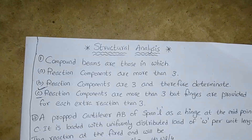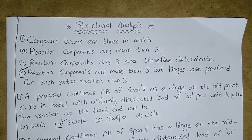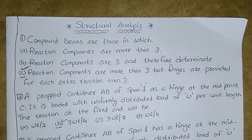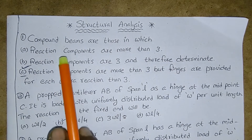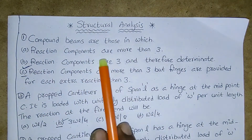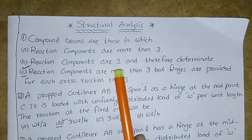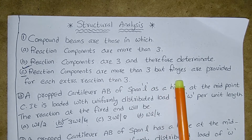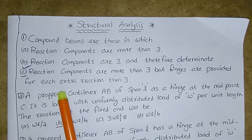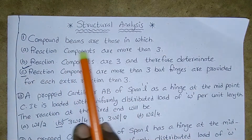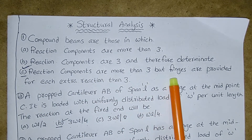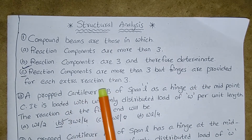Let us start today's class on structural analysis for paper three, environmental and civil engineering. Compound beams are those in which reaction components are more than three. Hinges are provided for each extra reaction beyond three. The answer is (c): reaction components are more than three but hinges are provided for each extra reaction than three.